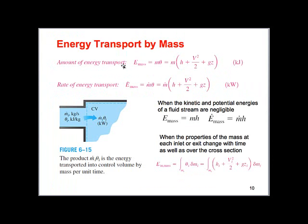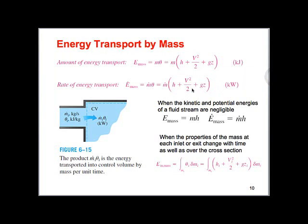We can write the total energy transported either using mass or, more commonly, using the mass flow rate to discuss the rate of transport. The second form — using mass flow rate — is more common and is what we'll typically use when applying the first law of thermodynamics to open systems. That concludes this lecture on chapter 6; there will be one more lecture on chapter 6, and then we'll solve some problems.